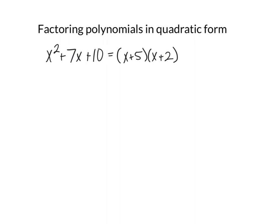So what do we mean by a polynomial in quadratic form? That means something like x to the 4th plus 7x squared plus 10. It looks a lot like a quadratic, but the highest exponent is higher than 2 — quadratics are degree 2, and degree is the highest exponent. This would factor very similarly, but instead of x we have x squared: x squared plus 5 times x squared plus 2.